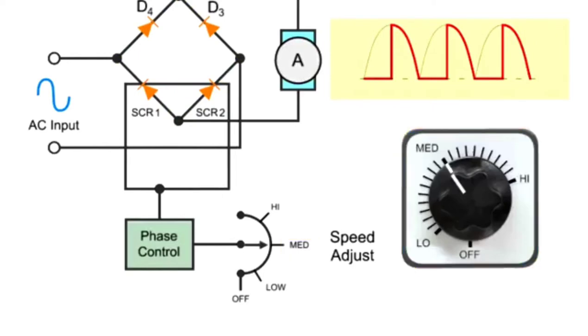Adjusting the speed at the operator controller will determine when the SCR is activated and at what point in the half-wave cycle the wave is turned on or allowed to pass through. The area of the waveform will determine the amount of voltage delivered to the motor.